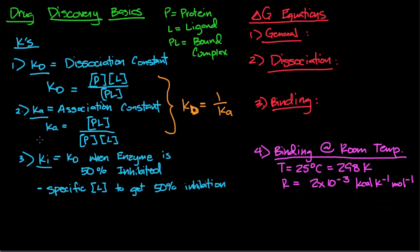Now Ki—typically you're going to see this as a measure of how potent an enzyme is. What you want to understand is that Ki is the dissociation constant when the enzyme is 50% inhibited. When the enzyme or protein is 50% bound to our given ligand, it's a specific concentration of ligand or drug to get 50% inhibition or 50% binding.